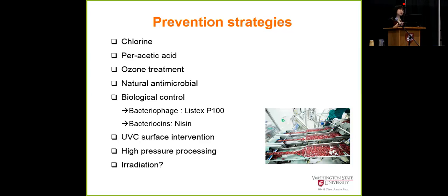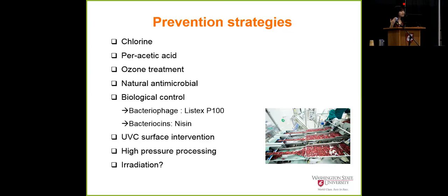Regarding fresh produce, there isn't yet a lot of ready, very effective intervention methods available. One key observation from the outbreaks is that in most cases, when there is an outbreak, Listeria is also found in the environment. So environment control is becoming very important — we shouldn't just focus on the produce itself. For the environment, we can do more intensive cleaning under harsh conditions. Steam can be used as a disinfection method on facility contact surfaces like stainless steel tables, because heat is a pretty effective way to eliminate Listeria monocytogenes.